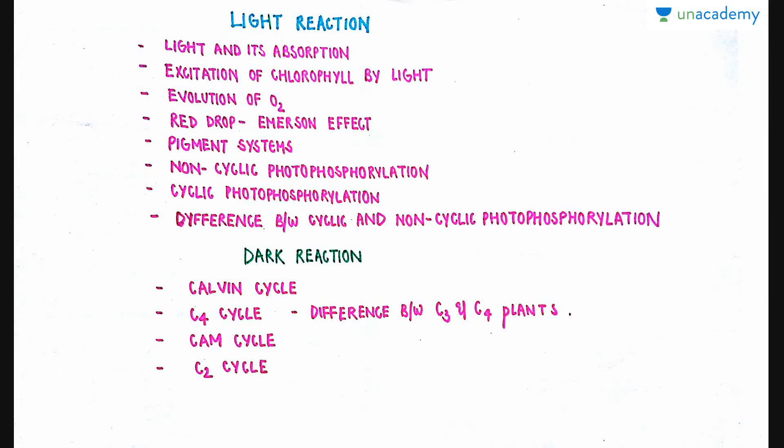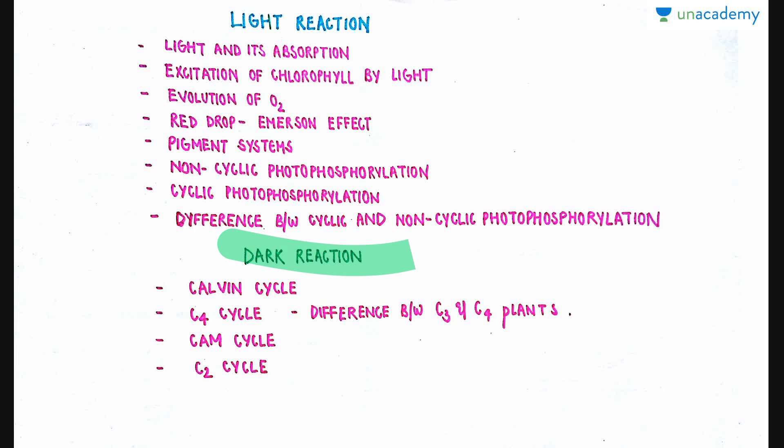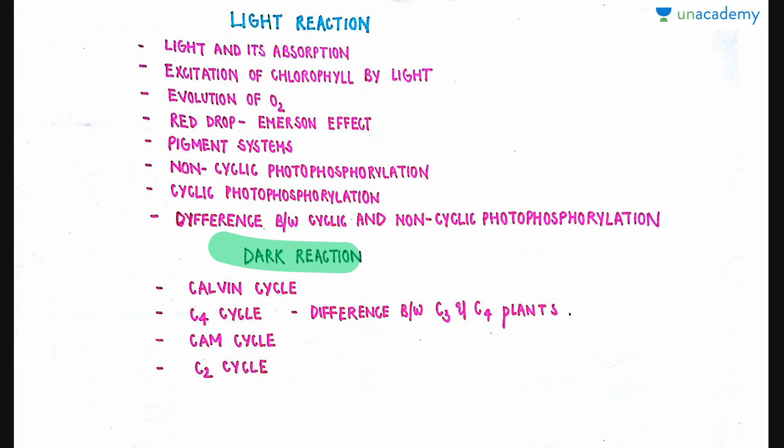In the previous videos I have already talked about the difference between light reaction and dark reaction, how assimilatory powers in the form of ATP and reducing powers in the form of NADPH2 are formed in light reaction, and how those assimilatory powers are further required and used in dark reaction in the Calvin cycle to actually produce glucose or sugars.